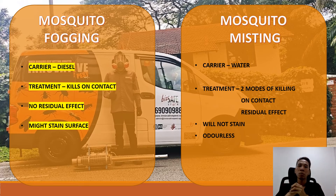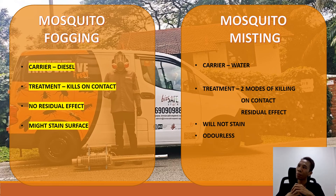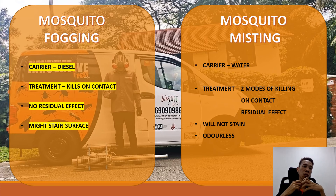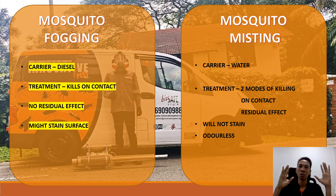Different clients have different aspects to consider. For us, mosquito misting is the best choice. For example, if you have clothes left outside to dry, it won't be a hassle for you to bring them in. Misting targets specific visible areas. For fogging, you can't control the smoke, so there's a chance it spreads everywhere throughout your house.